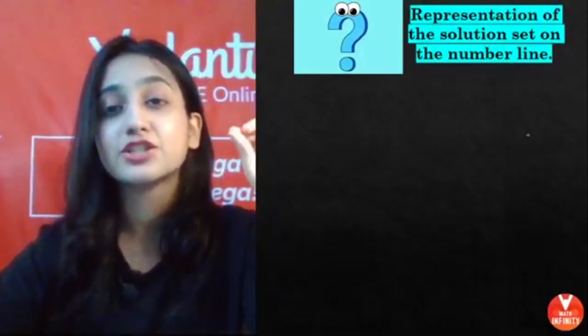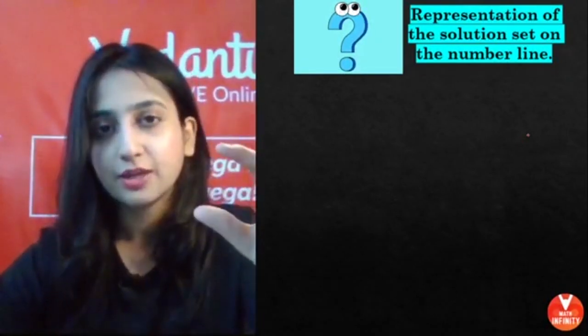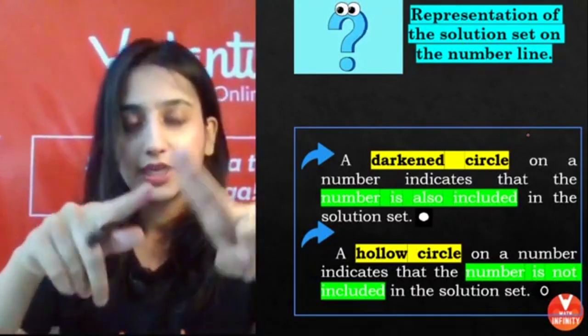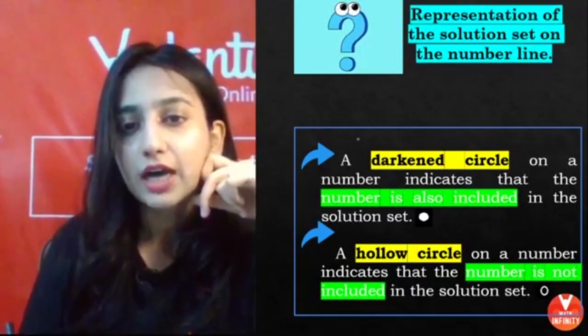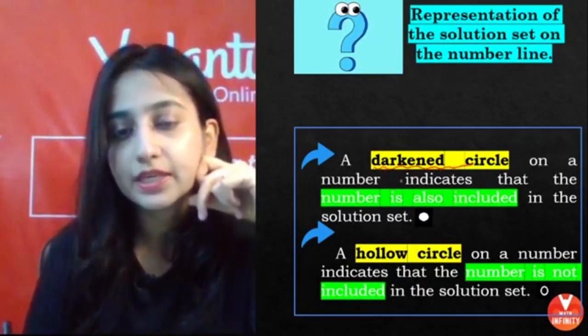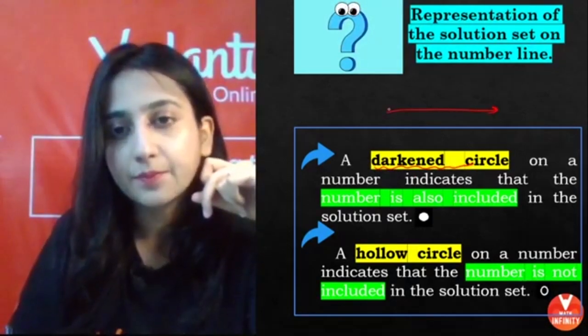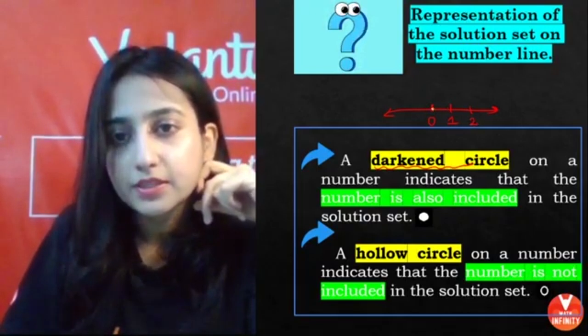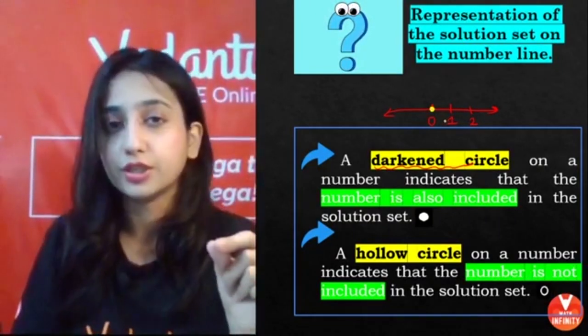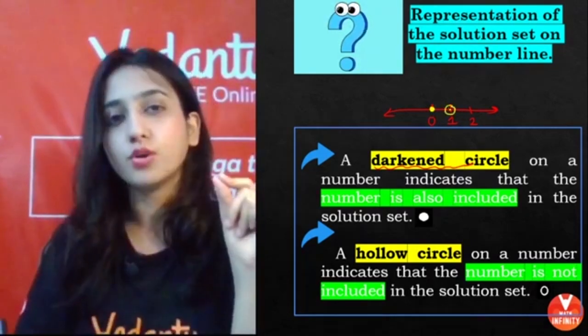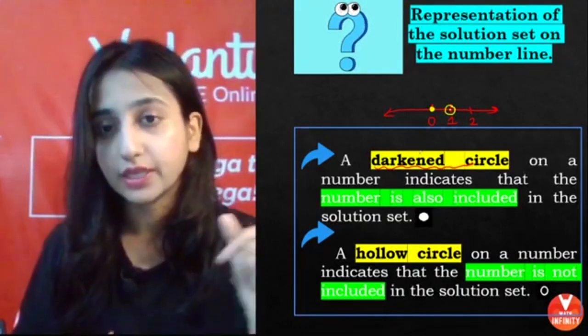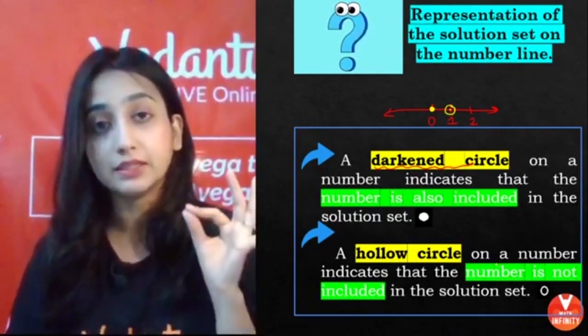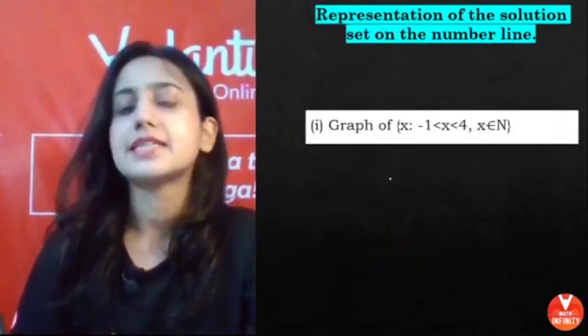Today we are going to learn about the representation of a solution set on the number line. We already studied solution set. Now we will see how to represent it on the number line. Basically two types of circles are used - one dark circle and one hollow circle. Dark circle means the number is included. For example, if I have this number line - this is zero, one, two - if I make a dark circle on zero, that means zero is included. But if I make a hollow circle on one, it means one is not included. So dark means included, hollow means number is not included. These simple things you have to keep in mind while plotting the graphs.